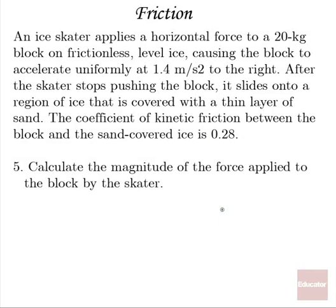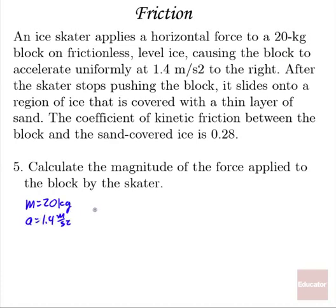Next: an ice skater applies a horizontal force to a 20-kilogram block on frictionless level ice, causing the block to accelerate uniformly at 1.4 meters per second squared to the right. After the skater stops pushing, the block slides onto ice covered with a thin layer of sand, where the coefficient of kinetic friction is 0.28. The magnitude of the force applied to the block by the skater is mass times acceleration: 20 kilograms times 1.4 meters per second squared, which is 28 newtons.